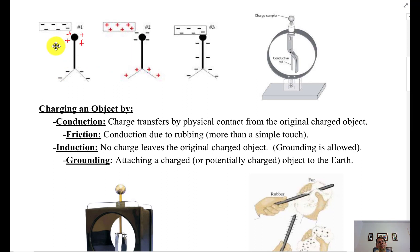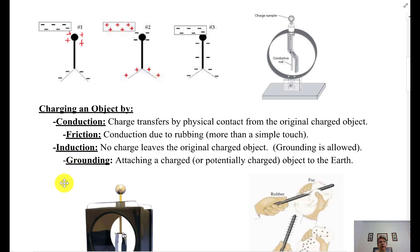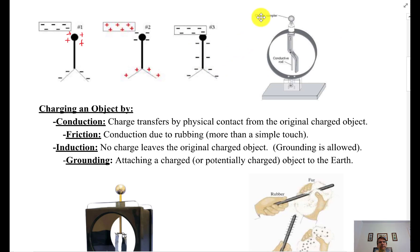Induction, in cases one and two, is charging something without transferring charge from the original object. The electrons in the leaves came from the rod via the conductor, not directly from the charging agent. The net charge is zero on the electroscope — it's charged by induction. Grounding is when you touch something and transfer the charge back to the earth or a very large object. If you touched a charged electroscope, you'd be the grounding agent — those electrons go onto you because you're so much bigger.